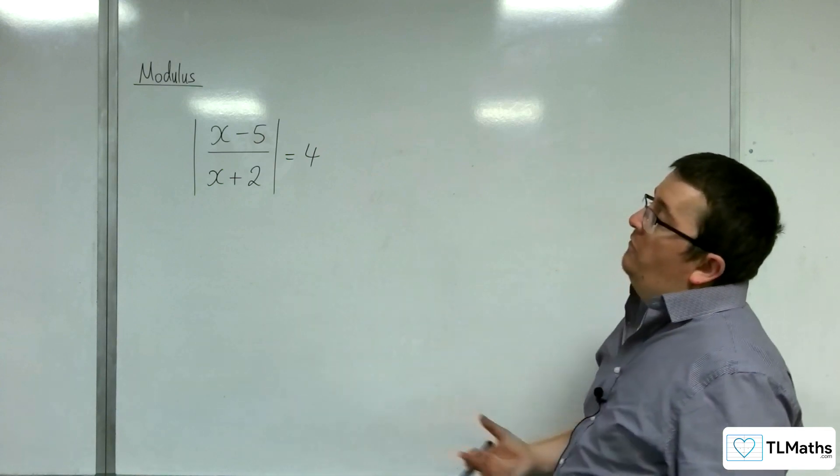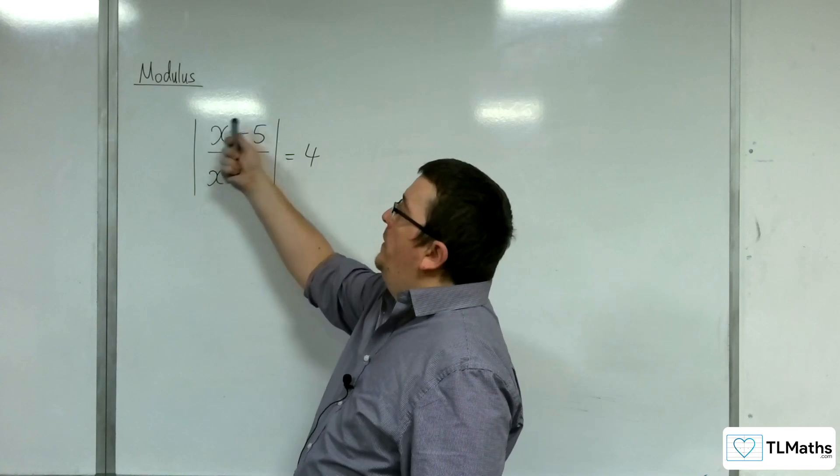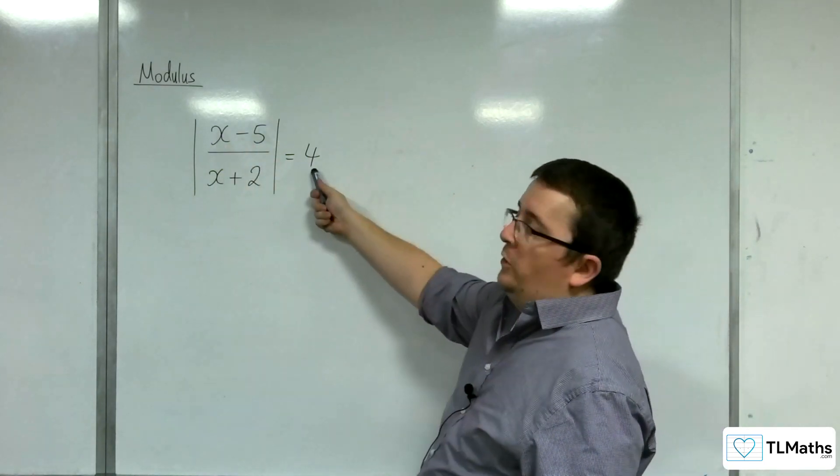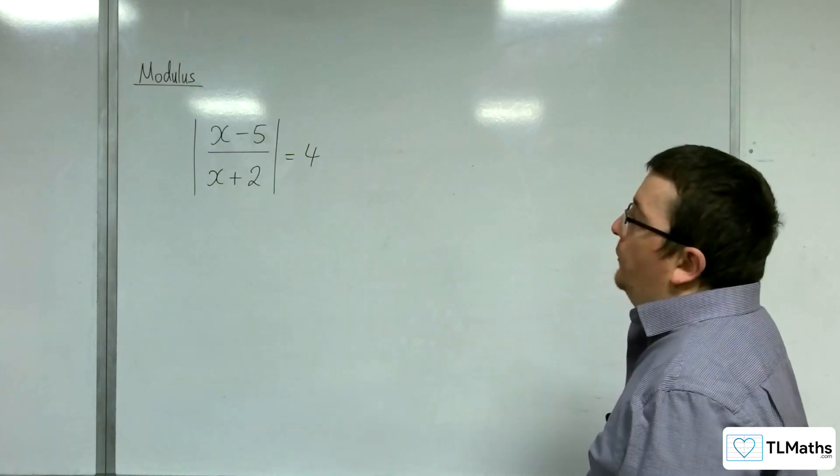If we go along the same lines as what we've been seeing, what we want to do is we want to sketch the left-hand side, y equals the modulus of x take away 5 over x plus 2, and sketch y equals 4 on the same axis, and then figure out where they are intersecting.